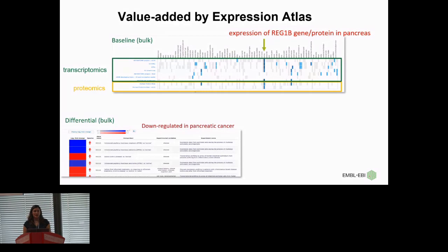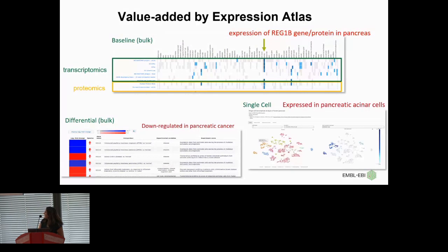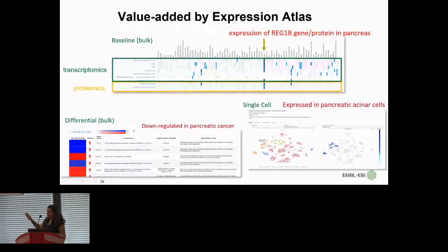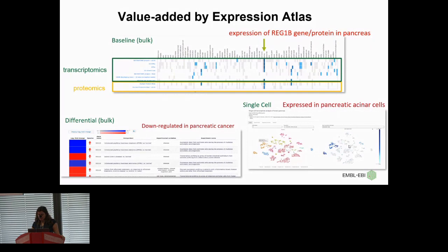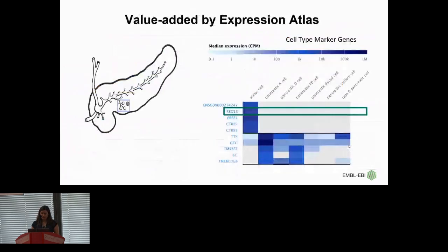Looking into the Single Cell Expression Atlas for the same gene, here is a selected study — the human pancreas — showing that this gene is specifically expressed in one particular cell type. You can see cells colored by cell type, and the same graph colored by the expression level of that gene. It is expressed in pancreatic acinar cells quite highly rather than in other cell types. This summarizes the value we add to studies by having them in the Expression Atlas.